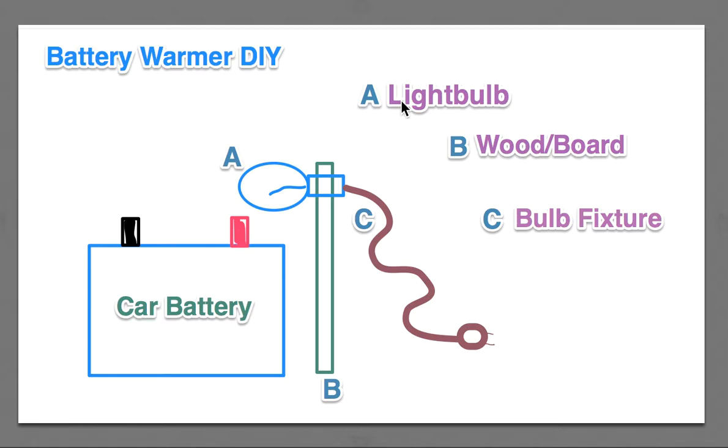So it's pretty simple. You've got a light bulb right here, number A. Then you've got a wood board that you drill a hole in and put the bulb fixture into.